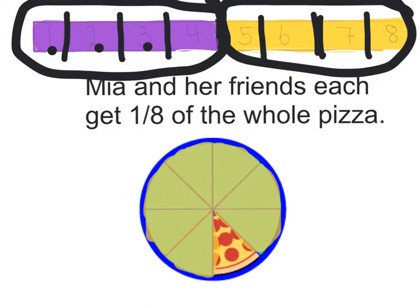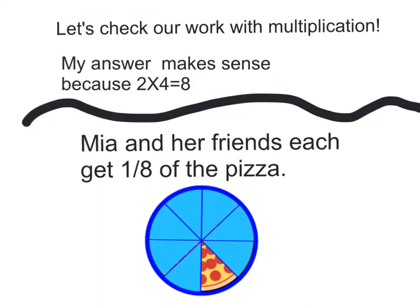So, Mia and her friends will each get one eighth of a whole pizza. Now, I'll check my work with multiplication. My answer makes sense because two times four equals eight. So, my final answer is Mia and her friends each get one eighth of the pizza.